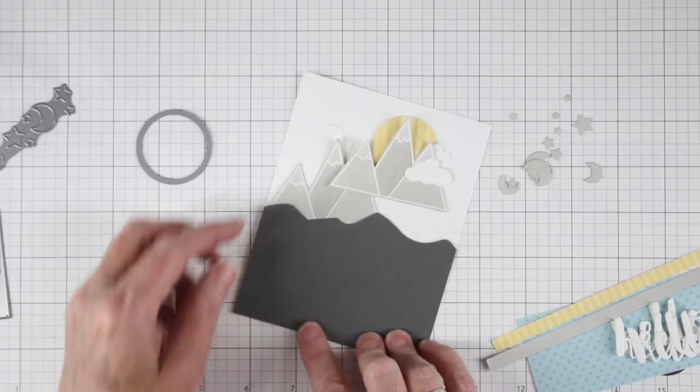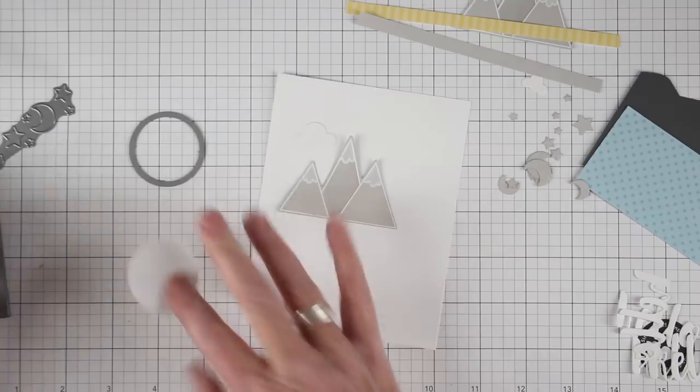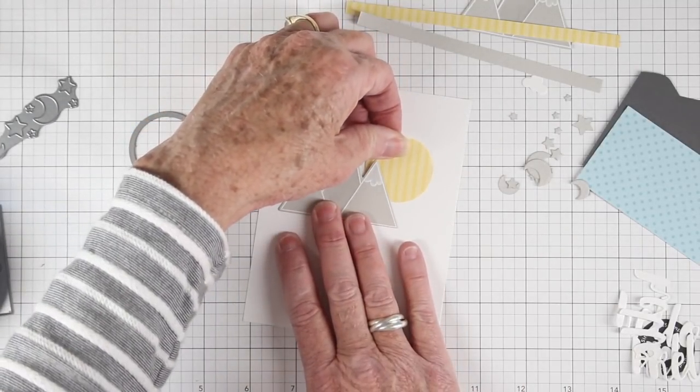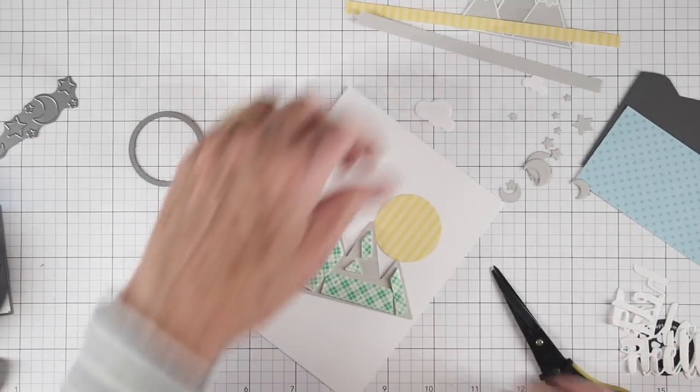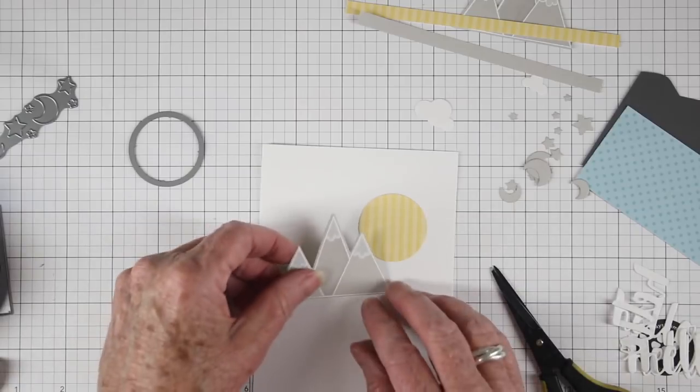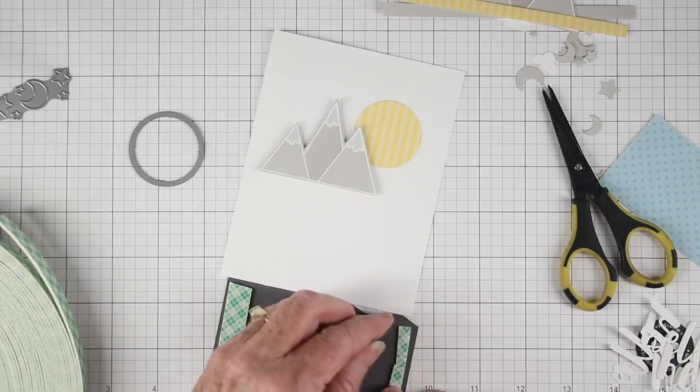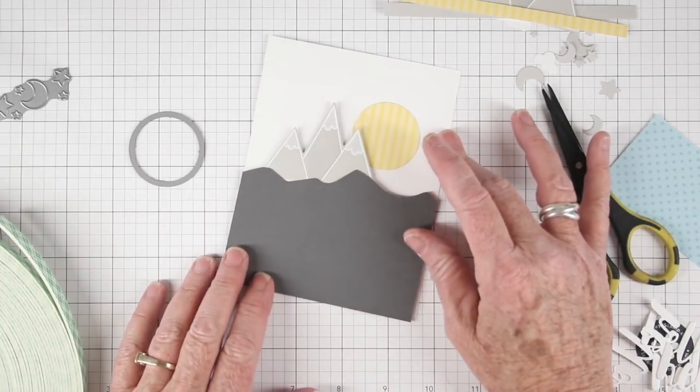I'll start my assembly by adding my sun to a piece of Neenah white cardstock and I want this to sit just behind the mountains. Then I'll add a little bit of foam tape to the back of one of the mountain scenes and I can place this right over the sun. I'm also adding some foam tape to the slate mountain scene and I am not putting tape where those mountains will sit underneath.